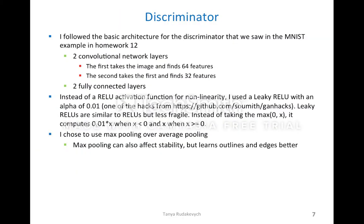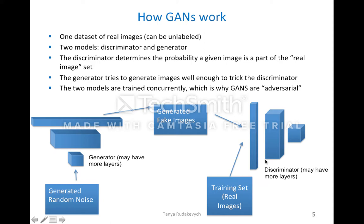So the discriminator: I followed the basic architecture for the discriminator from our homework. There are two convolutional network layers — the first takes the image and finds 64 features, and the second takes that first layer and finds 32 features. Then it's followed by two fully connected layers. You can imagine the first convolutional layer takes the input — the real images or the generated fake images, depending on the case — and turns it into features, then takes that and turns it into a smaller set of features, kind of focusing it.